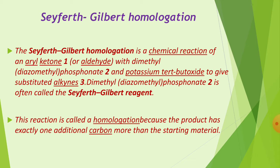The product of the Seyferth-Gilbert Homologation is an alkyne — a triple-bonded product. The dimethyl diazomethyl phosphonate is called the Seyferth-Gilbert reagent. This reaction is called homologation because the product has exactly one additional carbon more than the starting material.